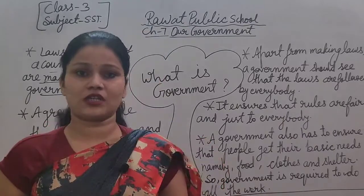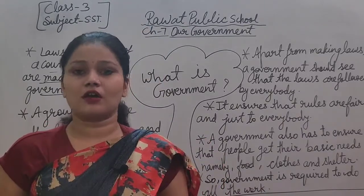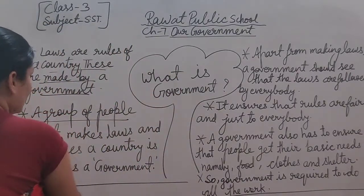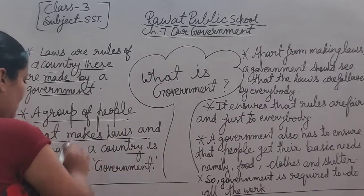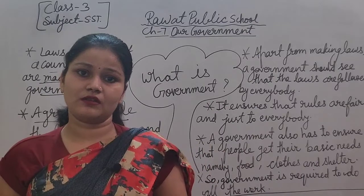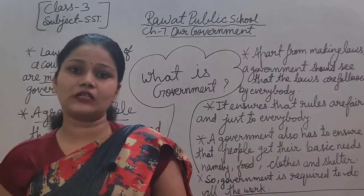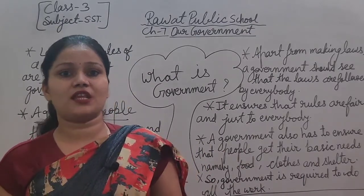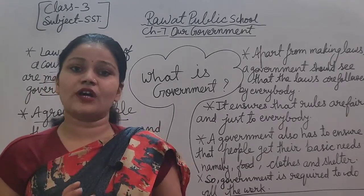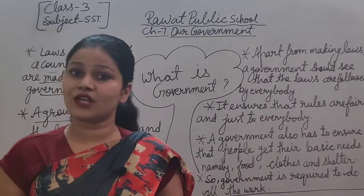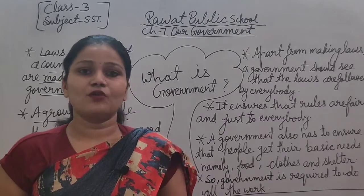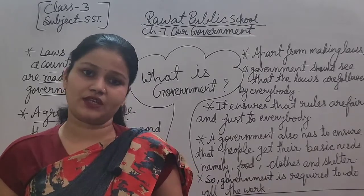Now, what is the definition of government? Government की definition क्या है? A group of people that make laws and manage a country is known as government. लोगों का एक group जो हमारी country के लिए rules बनाता है और हमारी country के सभी work को manage करता है, उसे हम government कहते हैं।